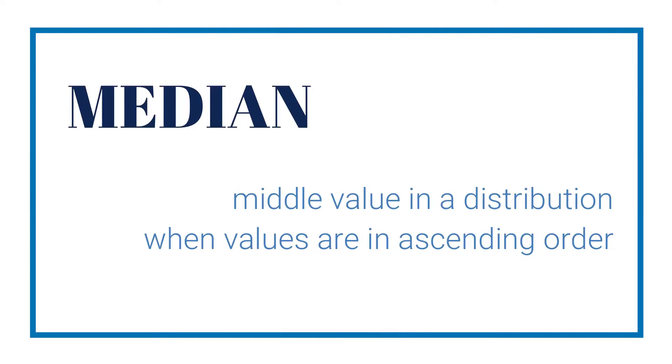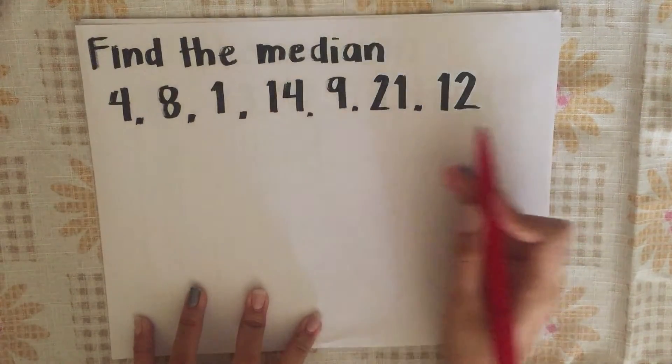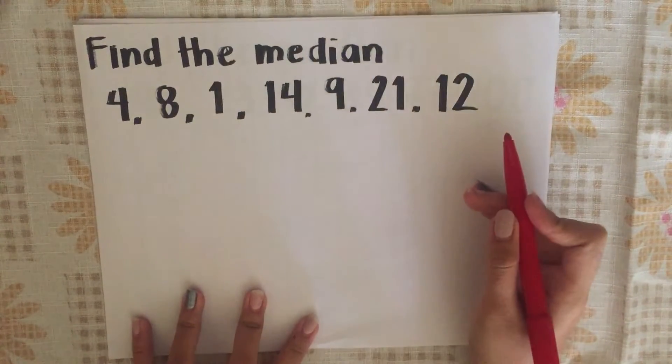The median is the middle value in a distribution when the values are arranged in ascending order. To find our median, we must arrange the following data in ascending order.